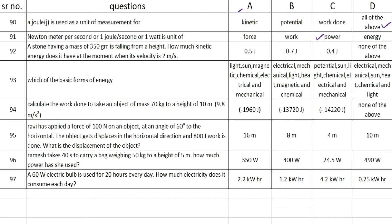The next one: a stone having a mass of 350 grams is falling from a height. How much kinetic energy does it have at the moment when its velocity is 2 meters per second? The correct answer is option B — 0.7 joule. The next: which of the following are the basic forms of energy? The correct option is option B — electrical, mechanical, light, heat, magnetic, and chemical.